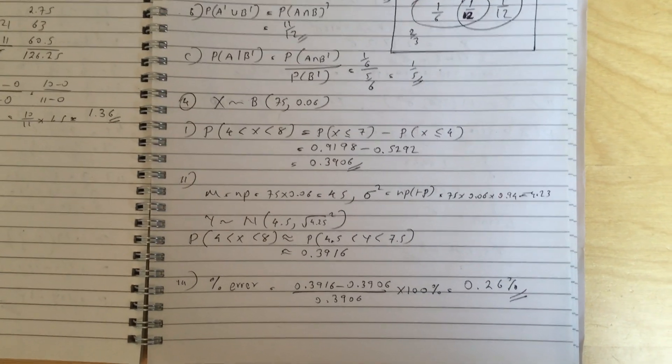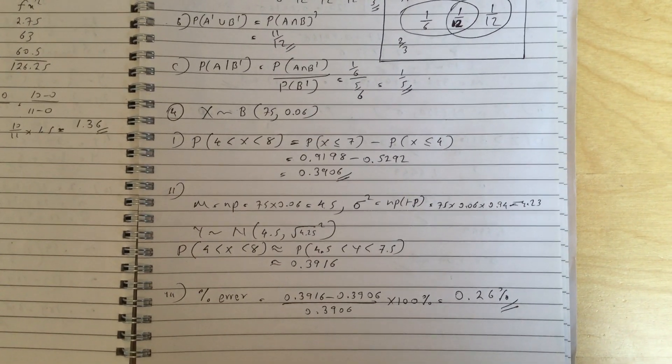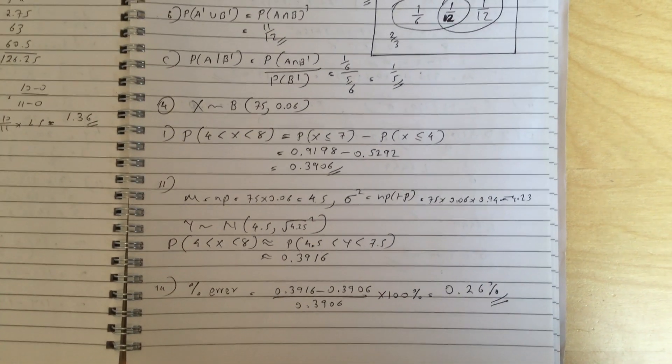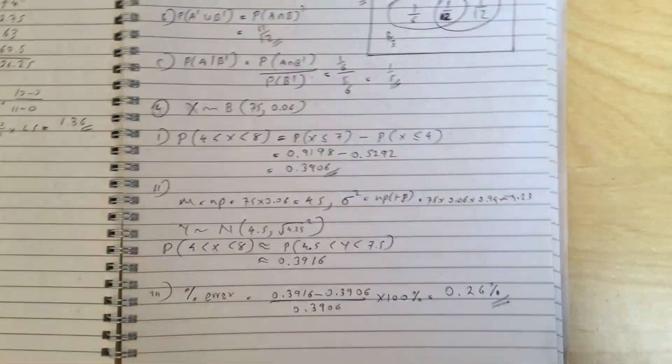Question 4, the probability using the binomial distribution is 0.3906, probability using the normal distribution is 0.3916 and the percentage error is 0.26.